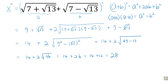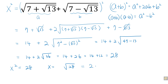We are looking for x. So basically x² equals 28. x can be both positive and negative square root of 28. However, when you look at the given expression, x must be a positive number, so we take only the positive square root of 28. Square root of 28 can be further simplified as 2√7. So the given expression is equivalent to 2√7.